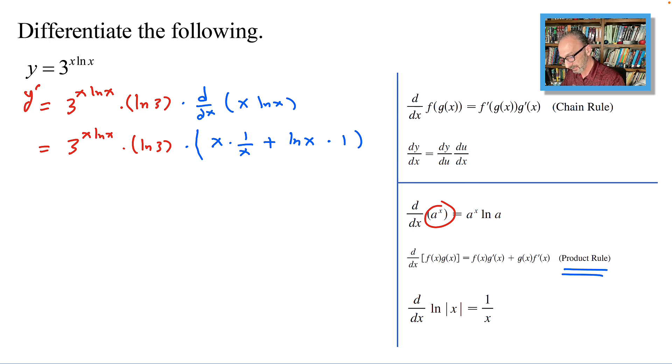Simplifying this will end up with the following: equals 3 to the power x ln x times ln 3 multiplied by 1 plus ln x. And that should do it.